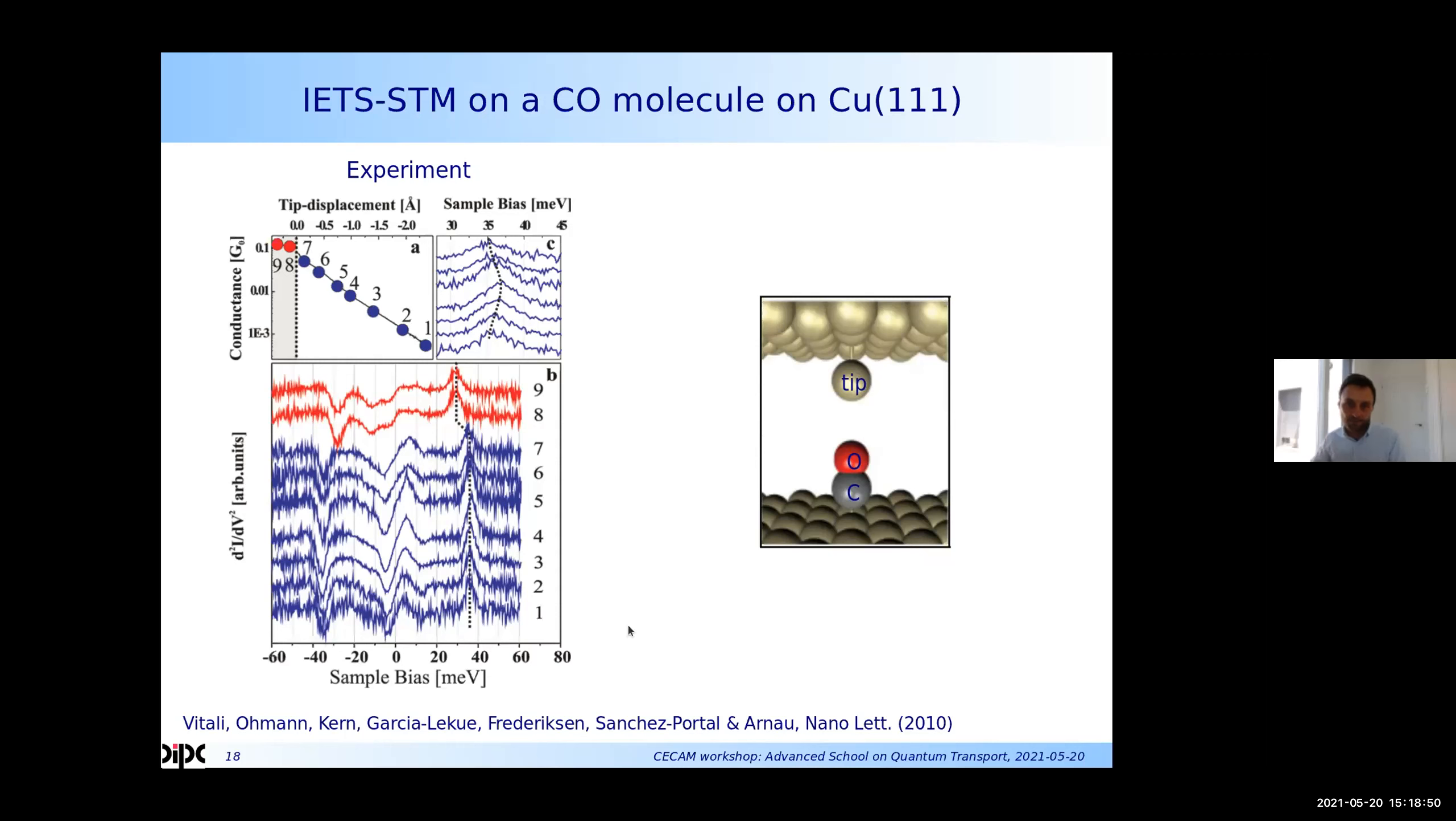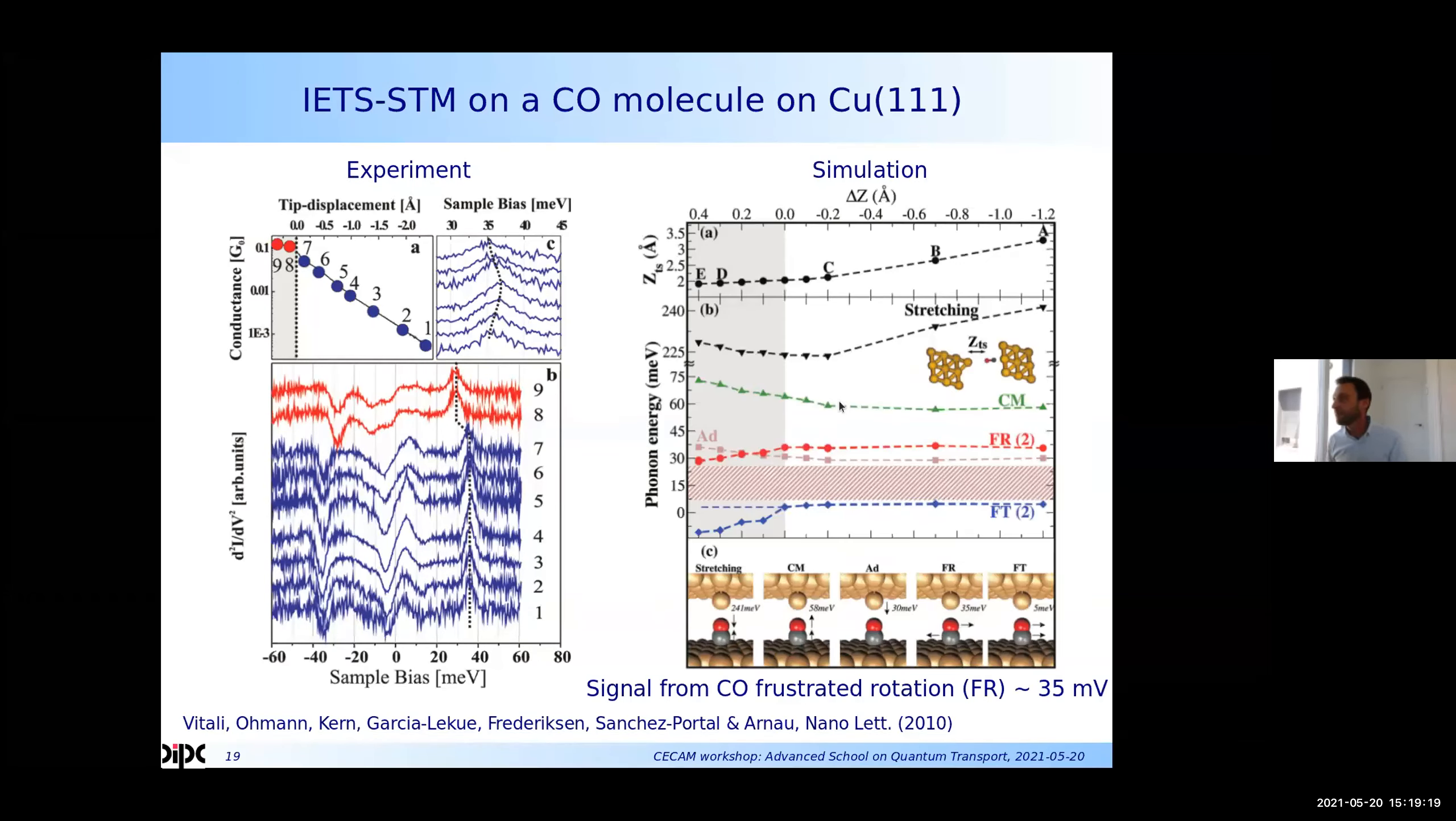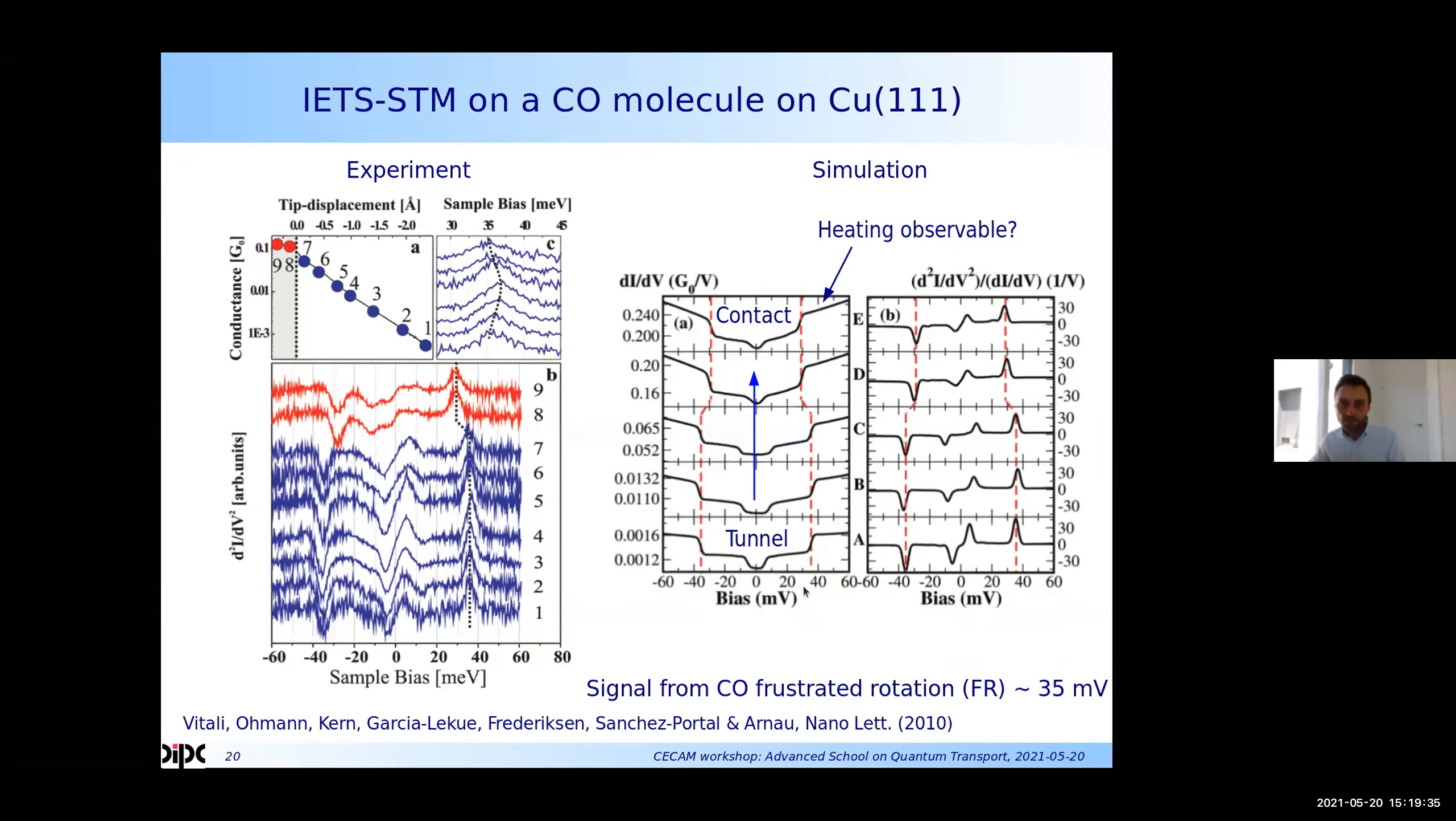And later, we also studied this problem with the experimental colleagues in San Sebastian who not only characterized the molecule with the tip in the tunneling regime, but also approaching the tip to bring it into contact with the molecule. And this frustrated rotation mode around the 35 millivolts was found to undergo a shift when it started to be in contact, chemical contact with the tip. So here, my colleague Marta might be around this afternoon. She carried out extensive calculations using Inelastica to compute the vibrational modes as a function of the electrode separation and how that affected the corresponding IETS. So on a general level, we could reproduce this kind of effect that when a new bond or a contact to the tip is formed, this frustrated rotation mode undergoes a shift in good agreement with the experimental data.